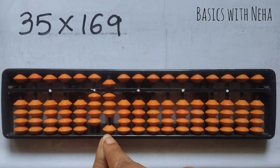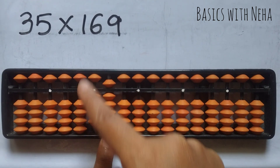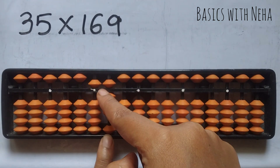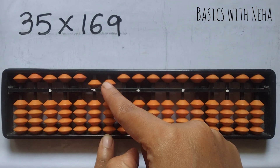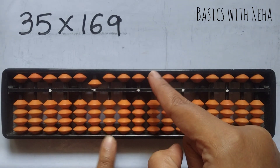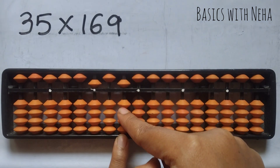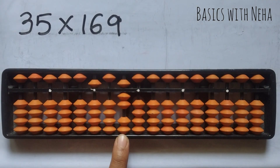So 2 you have to place here. To place 2, it is plus 10 minus 8. So plus 10 is plus 5, minus 4 and minus 8. And then place 7 here, 27.